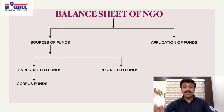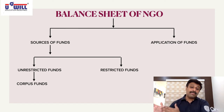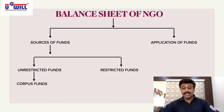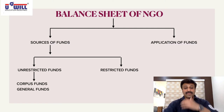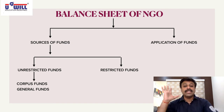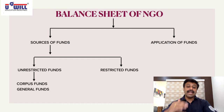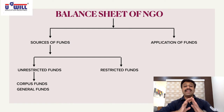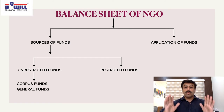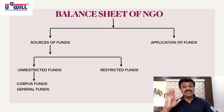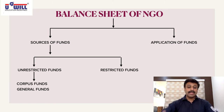Corpus fund is just like capital — it is the amount brought by the promoters at the beginning or at times of need. Second, we have general fund, which comes from the income and expenditure account. In the beginning it is zero; the first year, if there is surplus generated, that is transferred to general fund. You can use it for any purpose in future years. The general fund builds up over time.